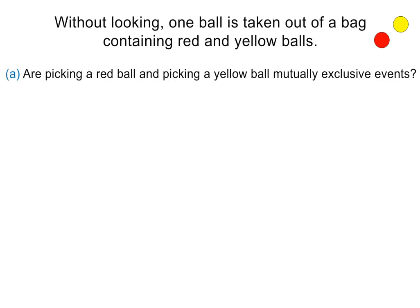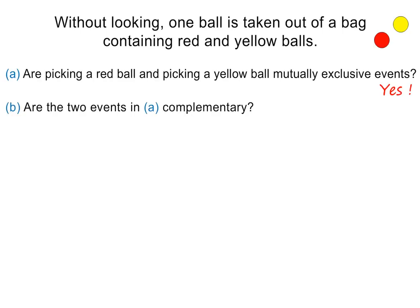Without looking, one ball is taken out of a bag containing red and yellow balls. Are picking a red ball and picking a yellow ball mutually exclusive events? Yes, because a ball is either yellow or red — it cannot be both colours. In part B, we are asked whether these two events are complementary. The answer is again yes, because there are no colours other than red or yellow in the bag.